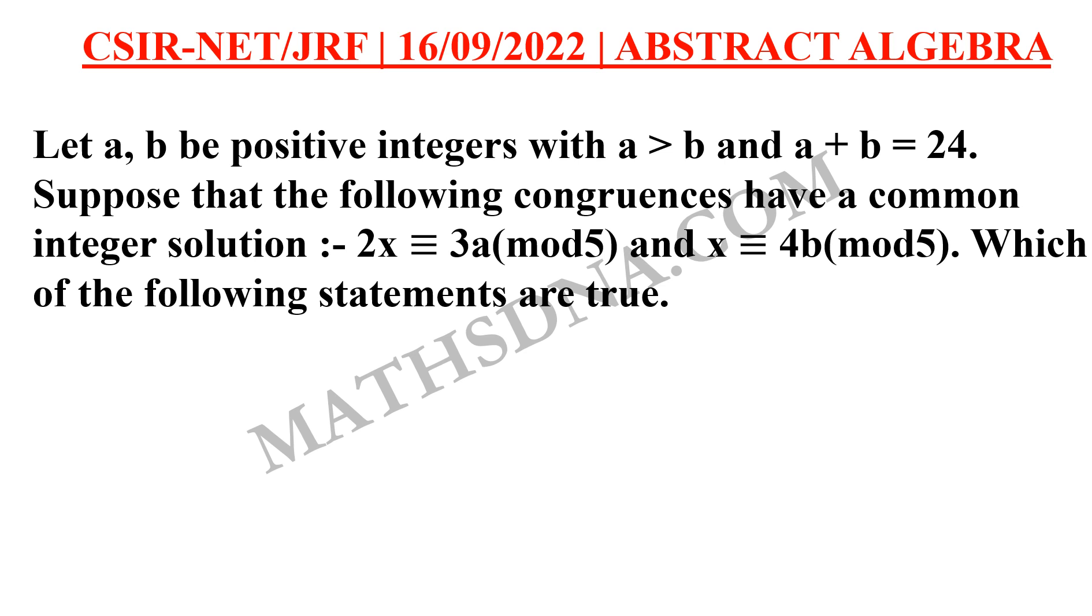Suppose that the following congruences have common integer solutions, that is, 2x is congruent to 3a mod 5, and x is congruent to 4b mod 5. Which of the following statements are true?